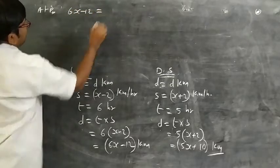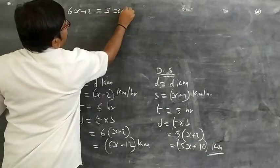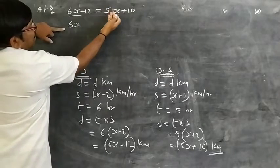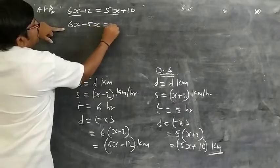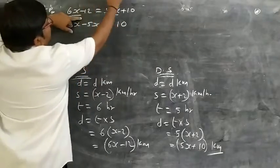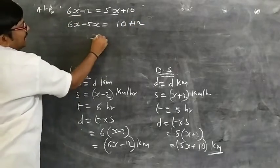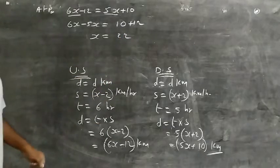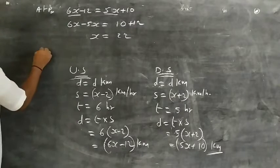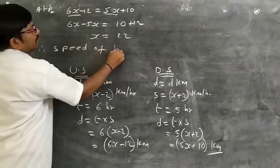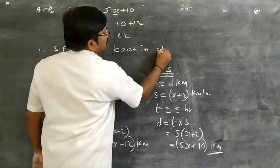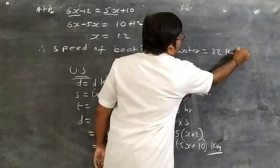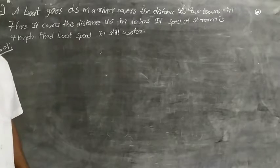Using the distance formula D = time × speed: upstream distance = 6(X − 2) = 6X − 12, and downstream distance = 5(X + 2) = 5X + 10. Since both distances are equal: 6X − 12 = 5X + 10, so X = 22. Therefore the speed of the boat in still water is 22 km per hour.